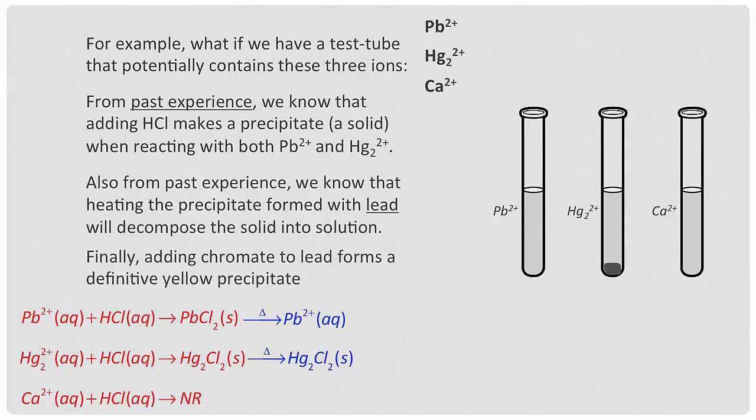It might be good to further confirm we have lead. One way to tell is that we know lead will create a bright yellow precipitate if you add chromate. So if we go ahead and add some chromate and see a yellow precipitate form, then we're pretty sure it's lead ions.